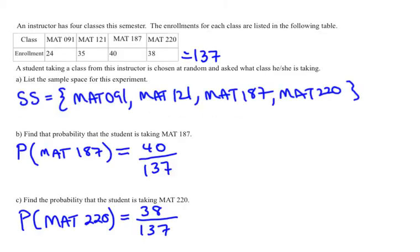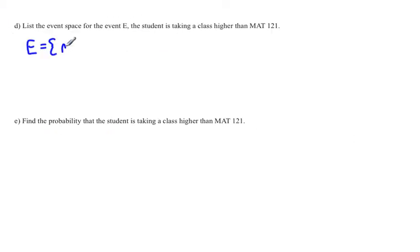So going back to our chart let's look at all the classes. We're going to assume that a course that has a higher number is in fact higher than math 121. So we see math 187 and math 220. So we'll write those two down as those are the events that make up that course. So a student could be in math 187 or a student could be in math 220.